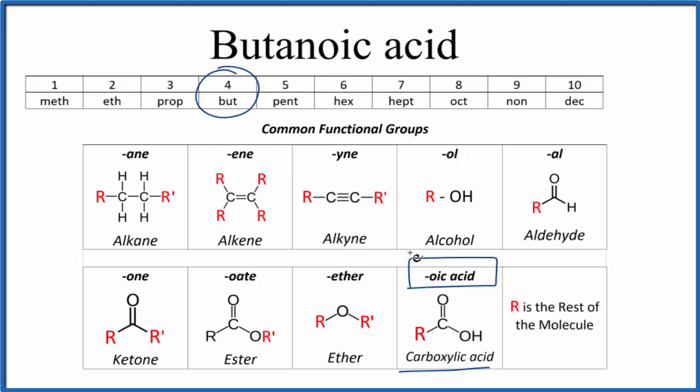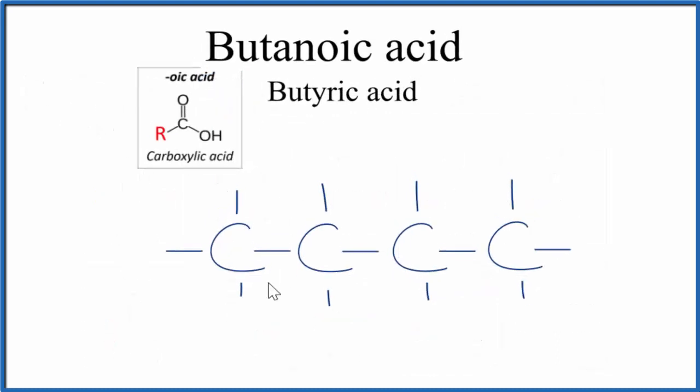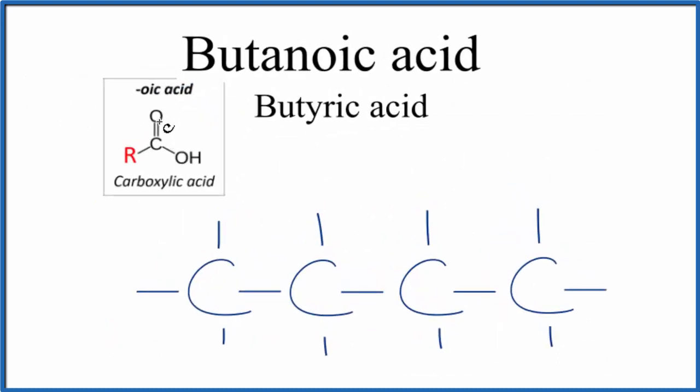So let's put four carbon atoms up in a chain. So we have our four carbon atoms, so on the end, we're gonna put that double bonded oxygen right there, and then we'll put an OH group.